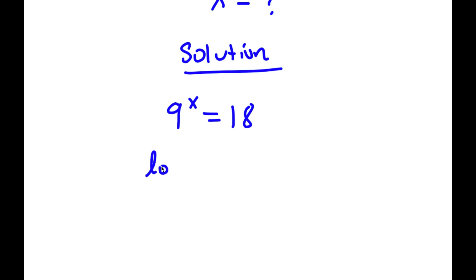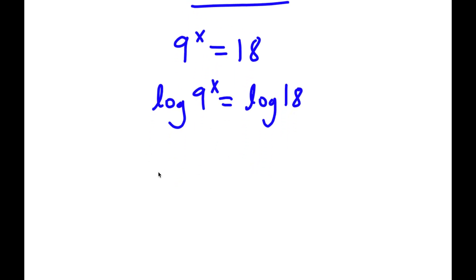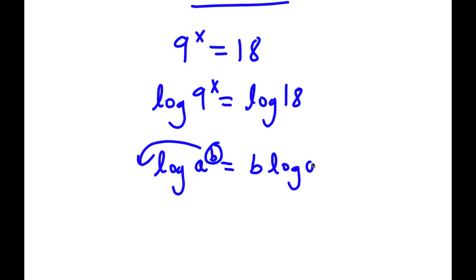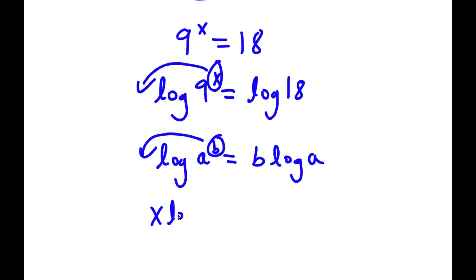So now I have log 9 to the power of x is equal to log 18. If I have something in the form log a to the power of b, I can move the exponent b to the front, so this equals b times log a. In this case, I have log 9 to the power of x, and I can move x to the front, giving x times log 9, which equals log 18.